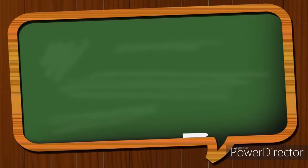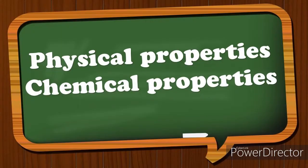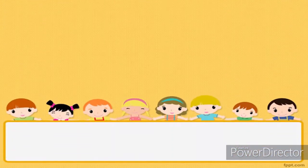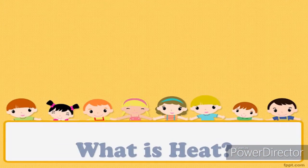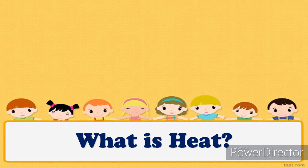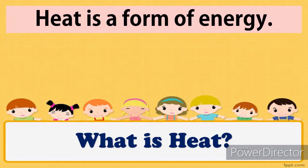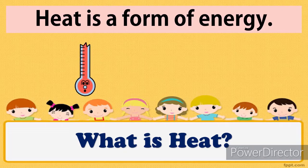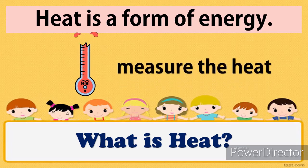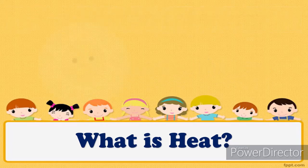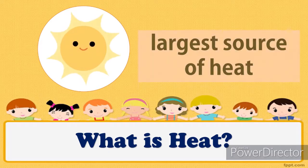The properties of matter can be classified as physical properties or chemical properties. Now, what is heat? Heat, as discussed in your previous grade, is a form of energy. It is described as how high the temperature is. We use a thermometer to measure heat, and the sun is our largest source of heat.